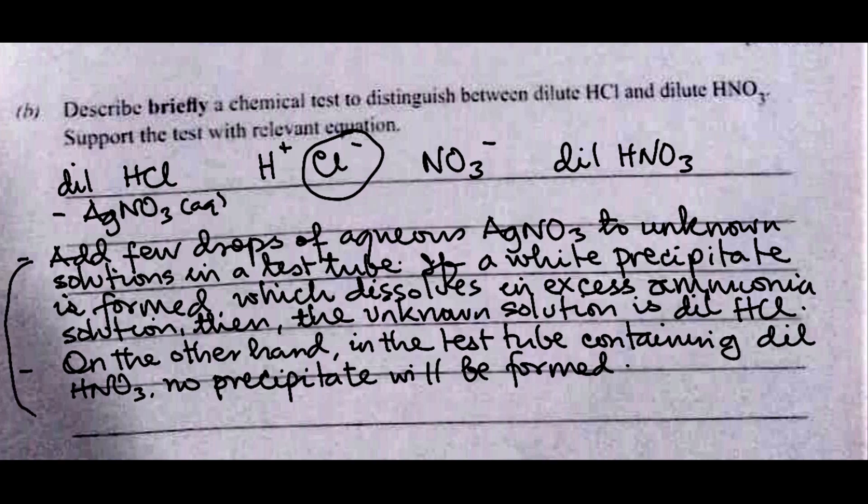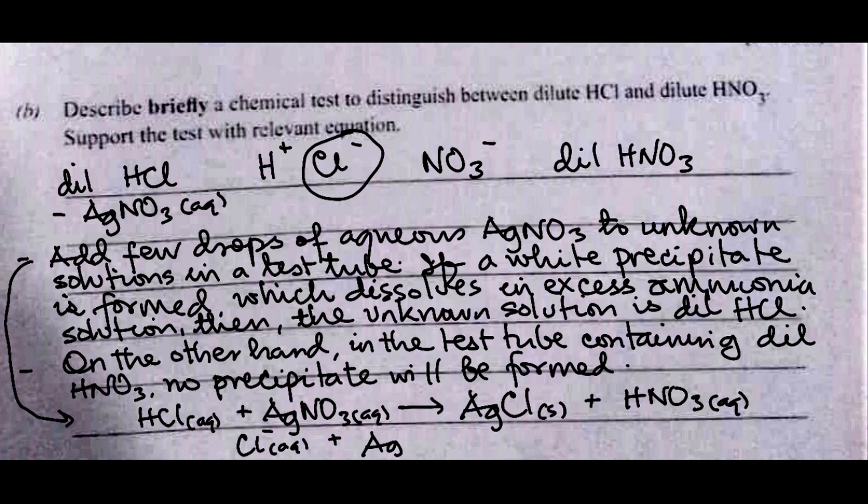So equation of reaction for this first one: HCl plus AgNO3 gives AgCl solid, that's the white precipitate, plus HNO3. We can write this as Cl⁻ aqueous plus Ag⁺ aqueous giving us AgCl solid. So that's the test that you can use to distinguish between dilute HCl and dilute HNO3.